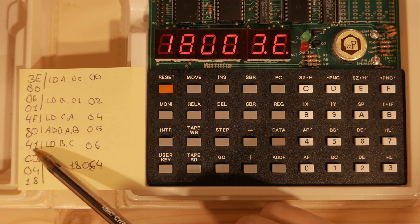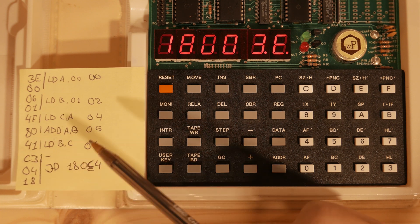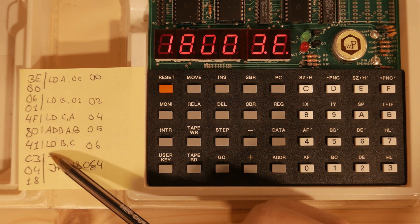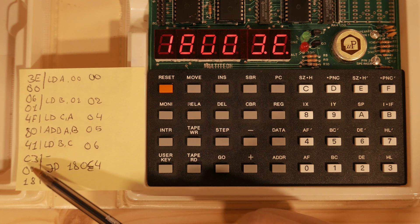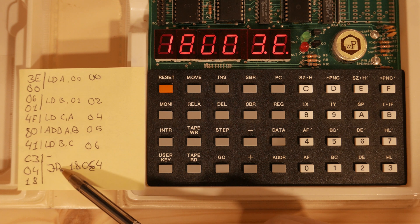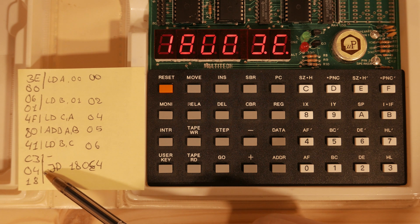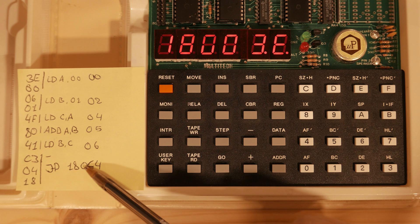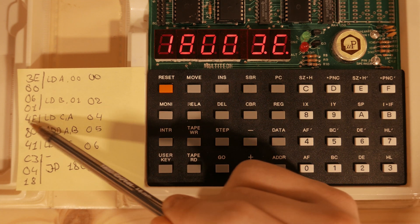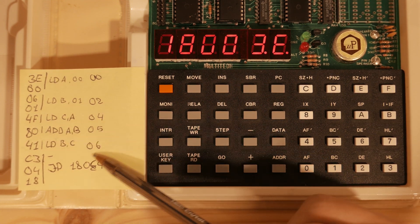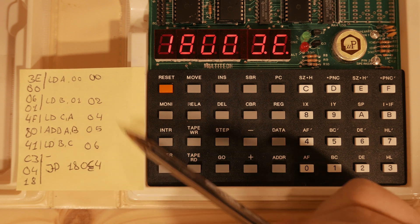Then 41, which is another one of these load register with other register, which loads C into B. Then comes this instruction here. And this is a jump instruction, as you might see. C3 means perform a jump instruction. And then 04 is the lower order bits of the address. Then comes 18, which is the higher order. So this means jump to 1804. So you see, we go back to this load C with A. And some of you might already have recognized this algorithm. It is an algorithm that generates Fibonacci's numbers.